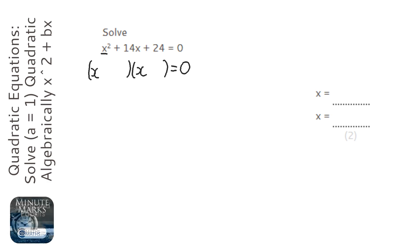We notice that we need to add together to make the 14, and times together to make the 24. But we spot they're both positive, and the only way that can happen is if both of these ones are positive.